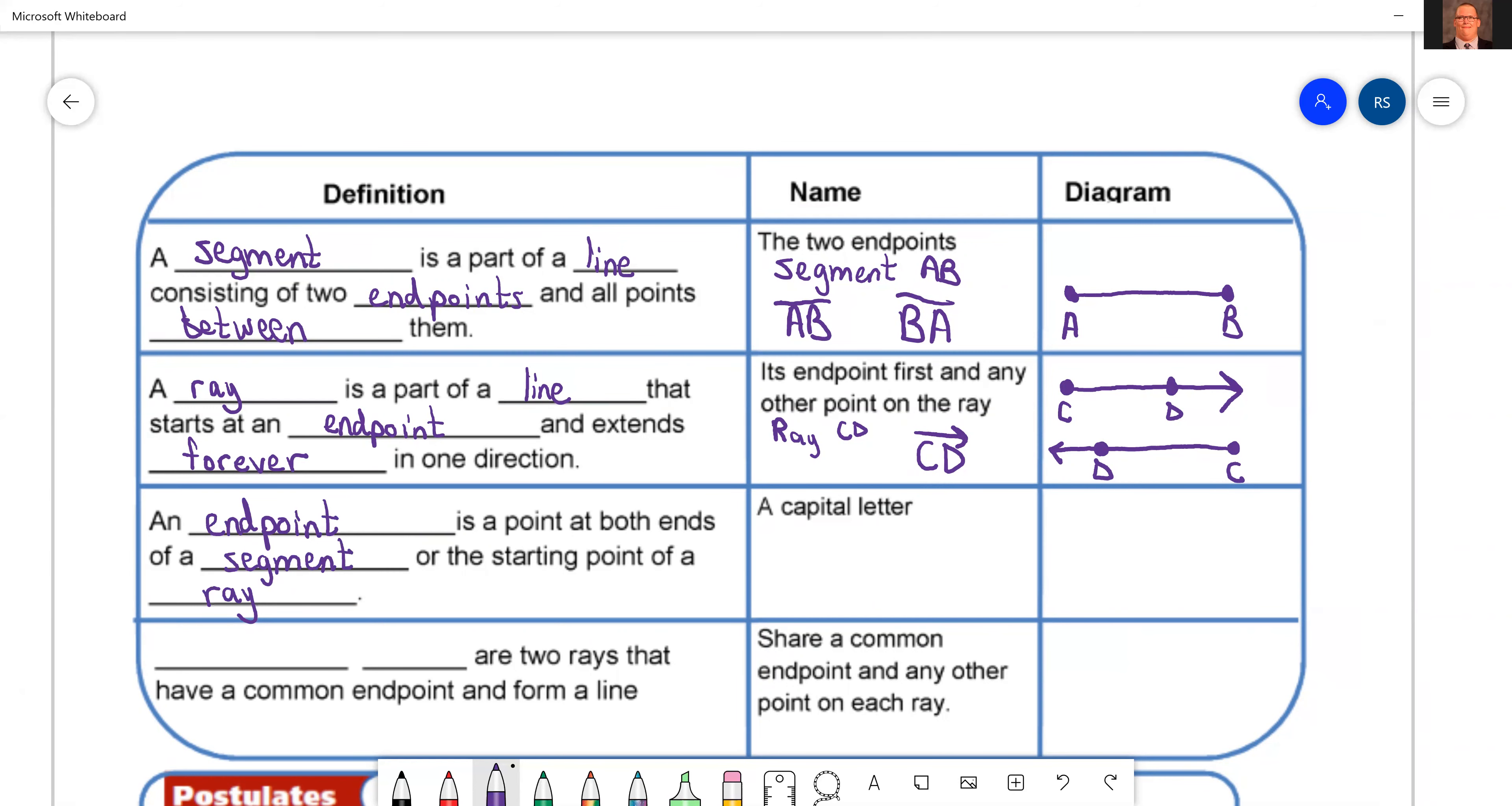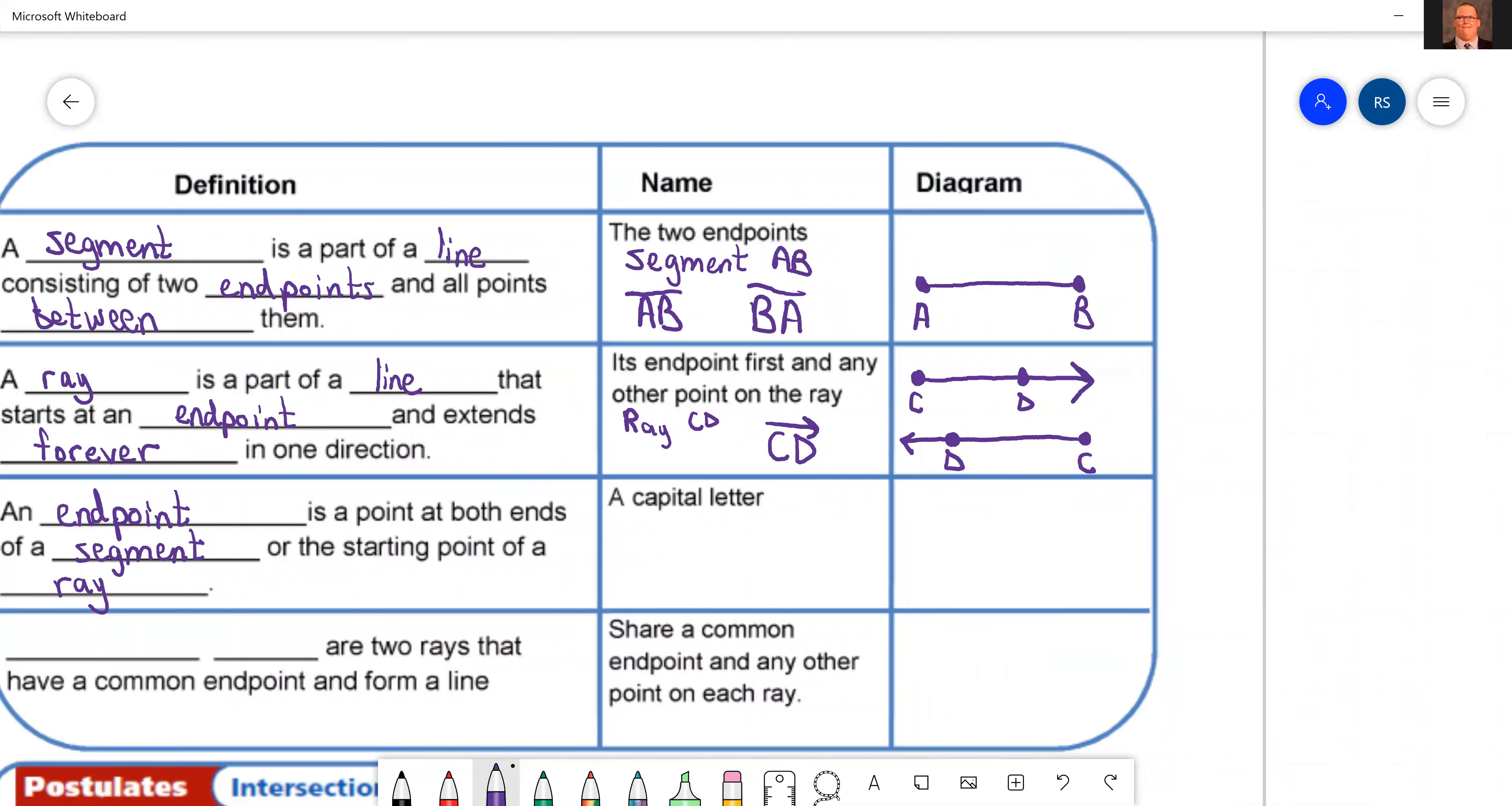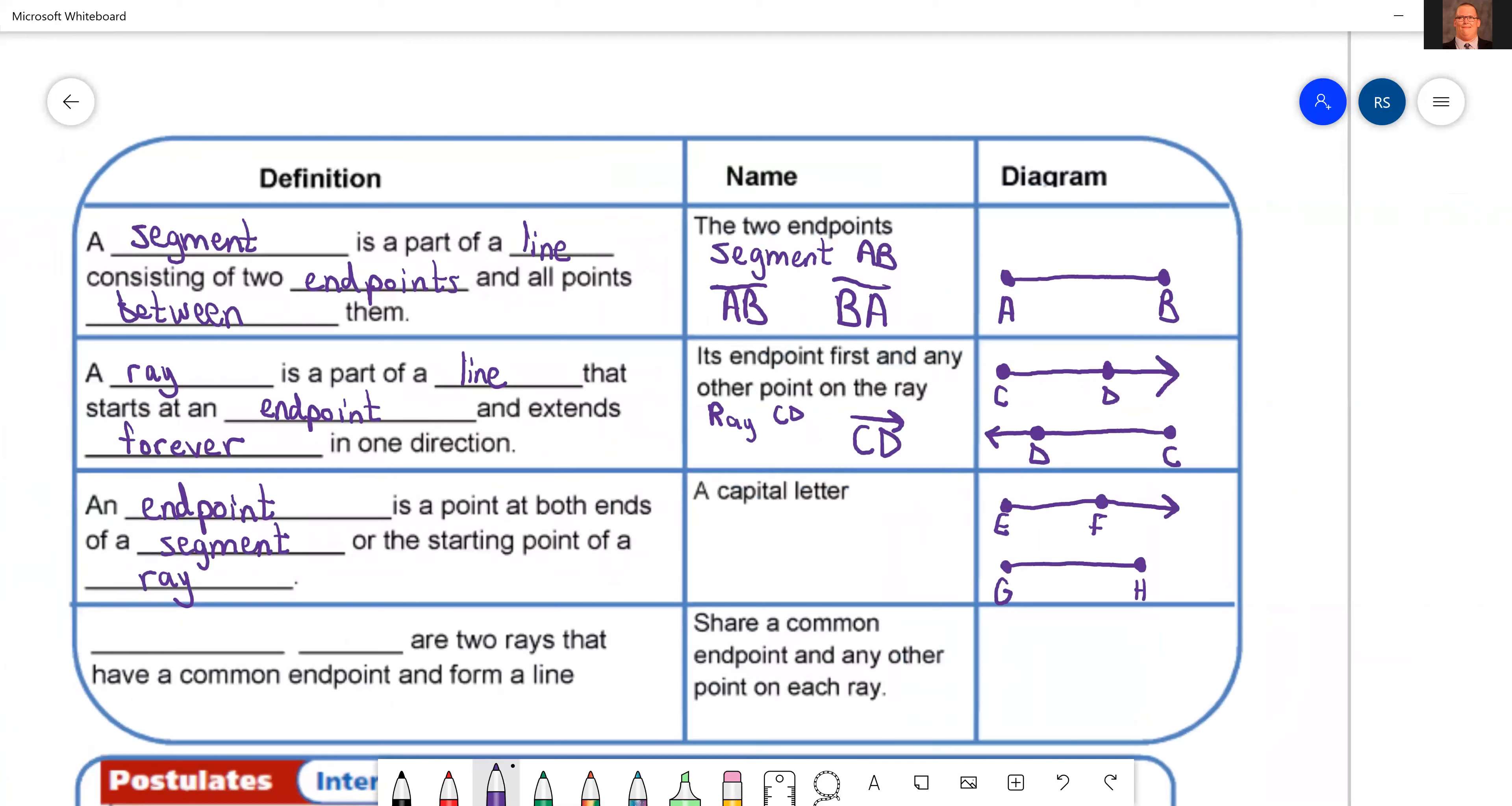is a point at both ends of a segment or at the starting point of a ray. And again, since it's a point, we just name them with capital letters. So let's draw a diagram with some points on it, and then we'll name the points. So our points here, it says at both ends of a segment. Okay, so we know G and H are points. We can say G and H are the starting point of a ray. E is our starting point of the ray. F we keep going through, so we can't say F, but E is our starting point.